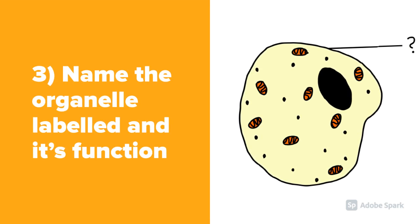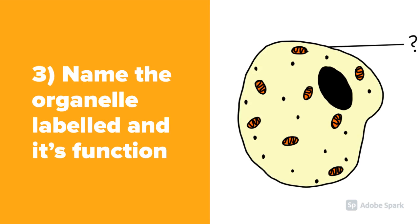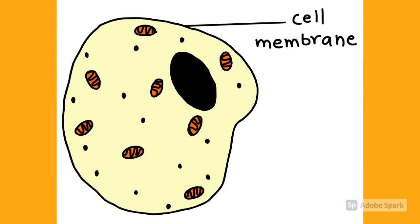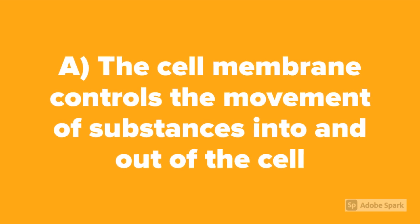Question number three: Name the organelle labeled and its function. It is the cell membrane. The cell membrane controls the movement of substances into and out of the cell.